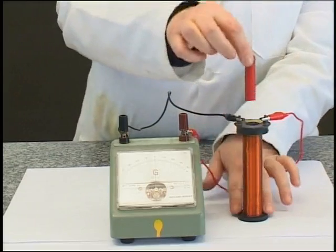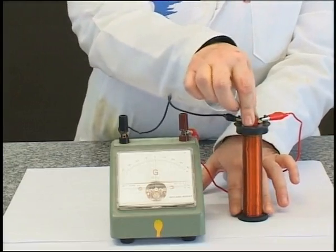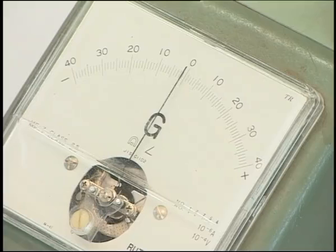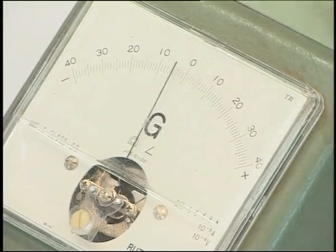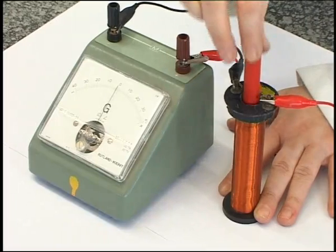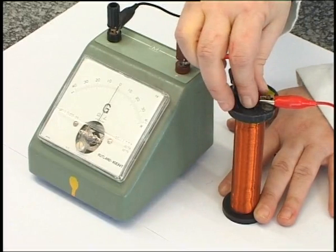Now, I'm going to move the magnet's north pole into the coil. As the coil feels the magnetic field increasing, it generates a current. When the magnet stops, the galvanometer needle does not move. That means there's no current when the magnet is not moving.